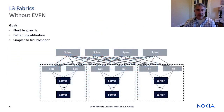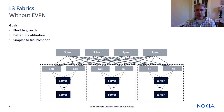To combat these challenges and to take advantage of smaller, cheaper switching hardware, many networks are being redesigned to use a Clos-based fabric approach. This design promotes routing over switching and makes the network easier to troubleshoot — no spanning tree — easier to scale, and provides better uplink utilization. Fabric designs are also well suited to the increase in machine-to-machine traffic, or east-west traffic.